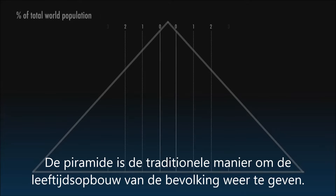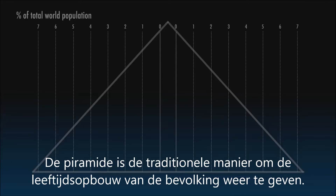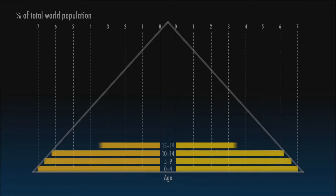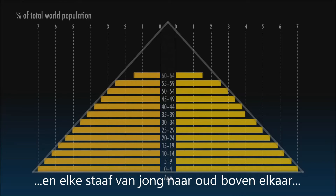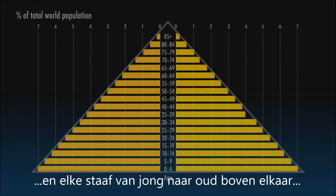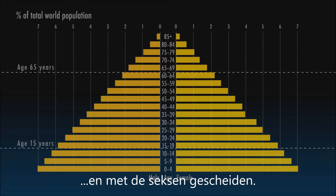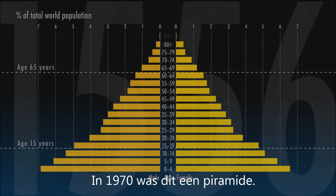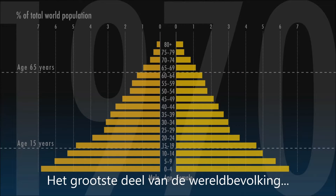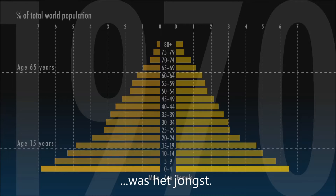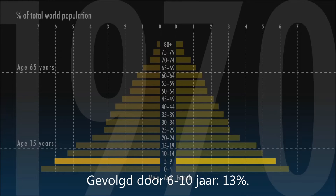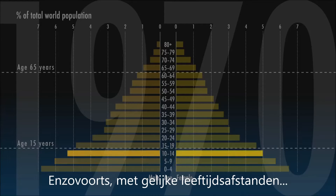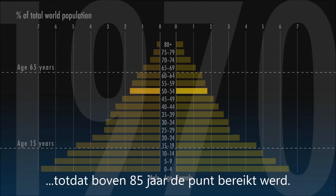The pyramid is a traditional way of visualising and explaining the age structure of a society. If you draw a chart with each age group represented by a bar, each bar ranged one above the other, youngest at the bottom, oldest at the top, and with the sexes separated, you get a simple shape. In 1970 that shape was a pyramid, because the largest segment of the global population was the youngest, 0-5 years old, comprising 14% of the total, followed by the next youngest, 6-10, with 13%, and so on in regular increments until, above 85 years old, there were so few people that the shape vanished into a point.